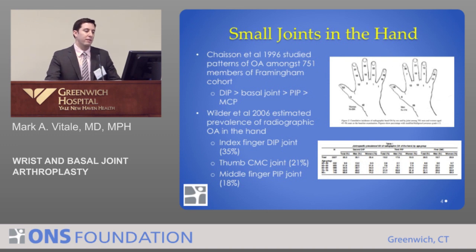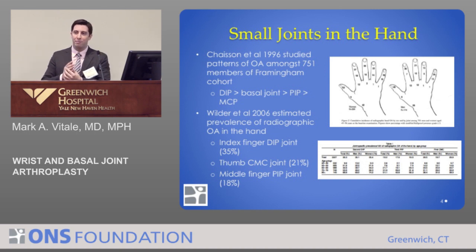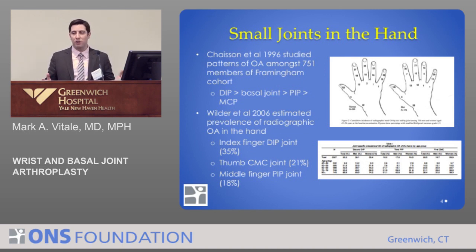As was discussed earlier, the incidence of arthritis in the small joints of the hand is most common in the distal joints — the distal interphalangeal joint. Next is the basal joint of the thumb, followed by the PIP and MCP joints. But this doesn't necessarily correlate to the symptoms that patients have and the surgeries that are performed.